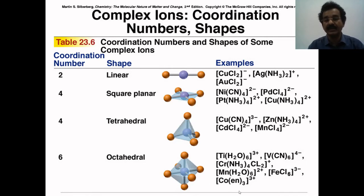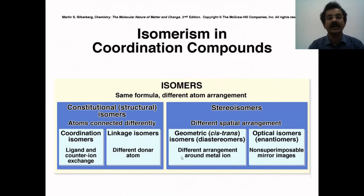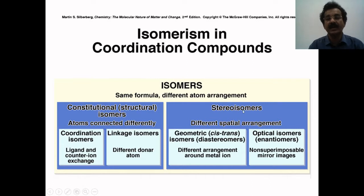Similarly, tris-ethylenediamine cobalt is another example. Regarding isomerism in coordination compounds, there are two important types of isomers with the same molecular formula but different atomic arrangements. Number 1 is constitutional isomers, also known as structural isomers, and number 2 is mirror image isomers, known as stereoisomers.